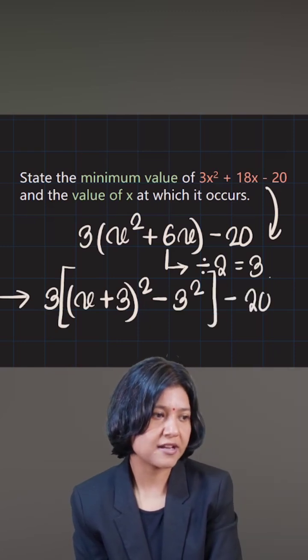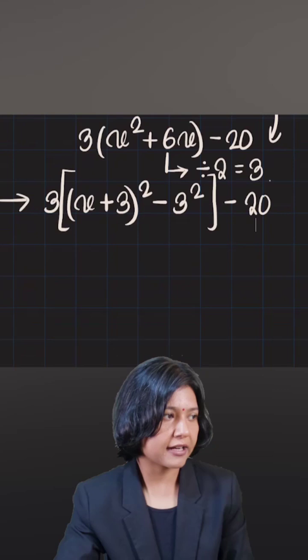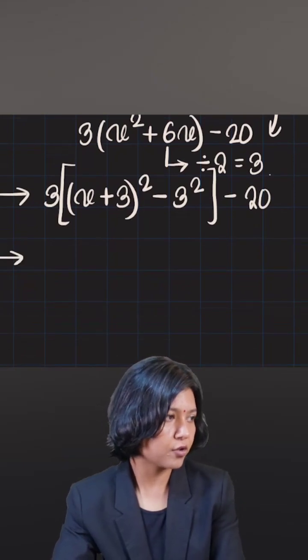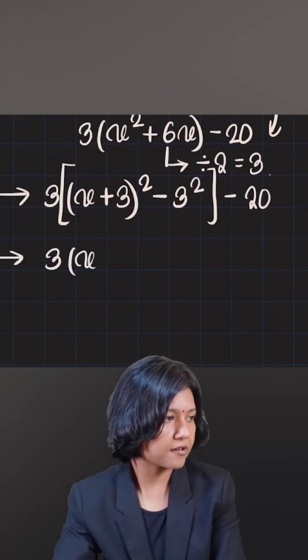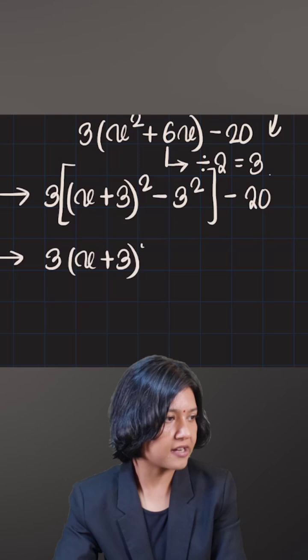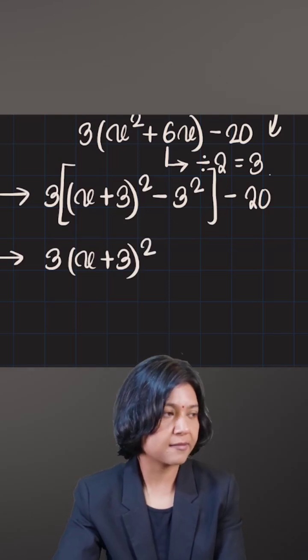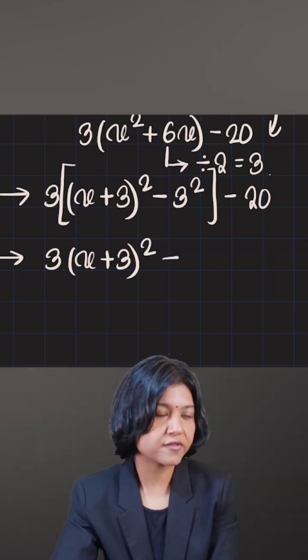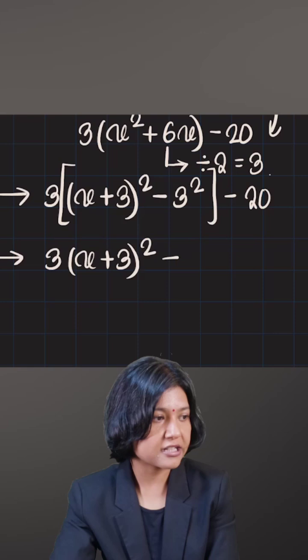And lastly, I have minus 20 remaining as it is. Let's open up the brackets. So we have 3 whole x plus 3 the whole square. And now note that 3 square is 9, but this negative 9 is getting multiplied by 3. So when it comes out of the bracket, I must write it as negative 27.